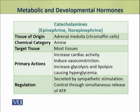The catecholamines also have an important role in metabolism. Epinephrine and norepinephrine are produced by the adrenal medulla, where chromaffin cells produce these hormones. These are amine hormones and they target most tissues of the body. Their primary actions include increasing cardiac activity, inducing vasoconstriction, and increasing glycolysis and lipolysis — as a result they cause hyperglycemia. Their secretion is stimulated by sympathetic stimulation and controlled through simultaneous release of ATP.